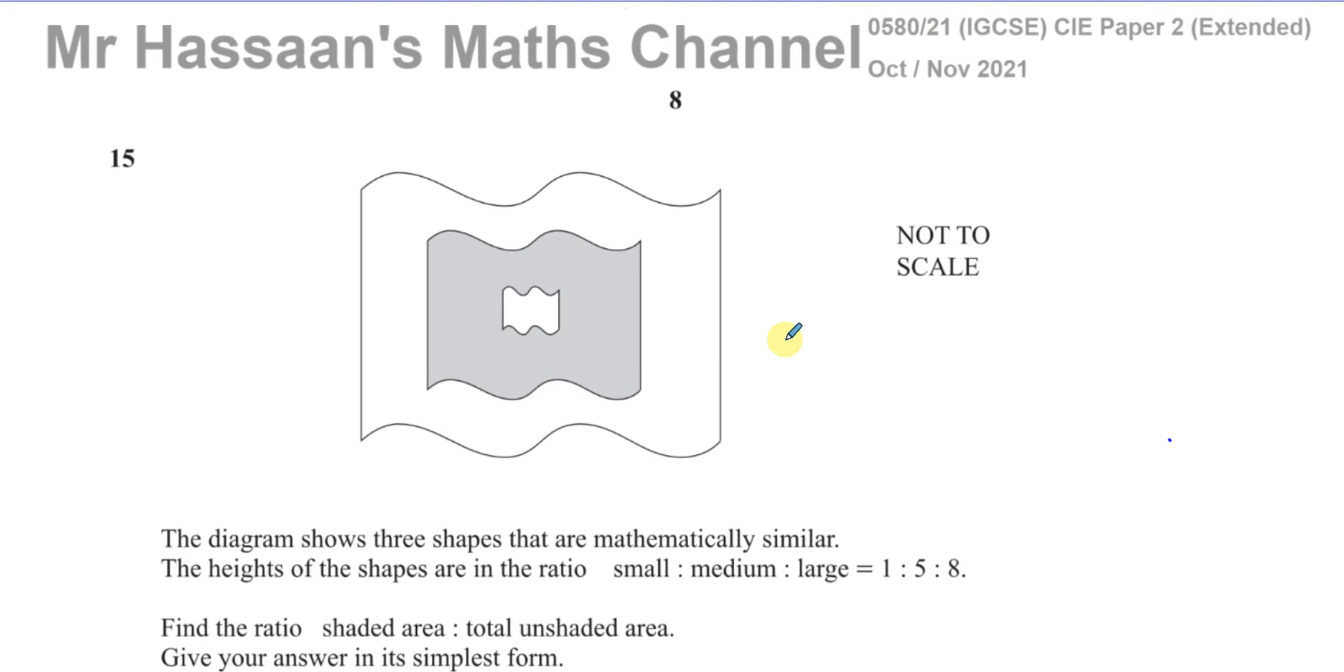Now, I know that the ratio of the areas is the square of the ratios of the lengths for similar shapes. So the ratio of the areas will be small to medium to large, is going to be basically 1 to 25 to 64. That would be, if that's the ratio of the lengths, that's the ratio of the areas.